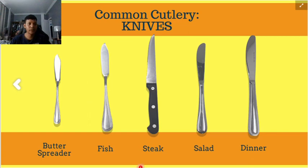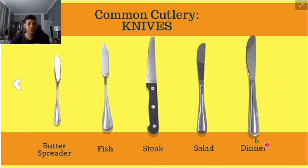We can observe that there are different kinds of cutlery — different knives, forks, and spoons. As hospitality management students or future workers in the hospitality and tourism industry, it is important to have knowledge of these types, especially in fine dining. We must know how to use, when to use, and which specific cutlery to use for each course — appetizer, soup, salad, main course, and dessert. We will discuss this more in a later lecture.